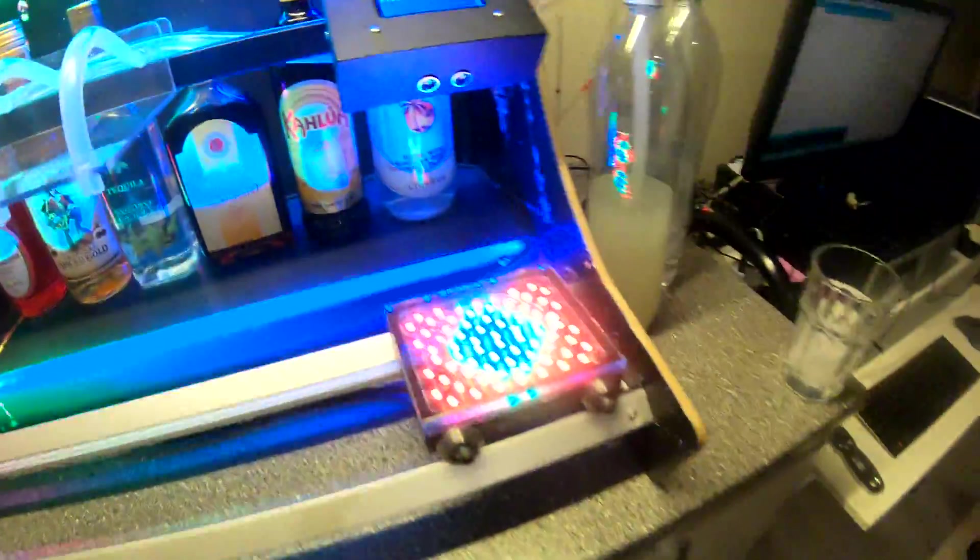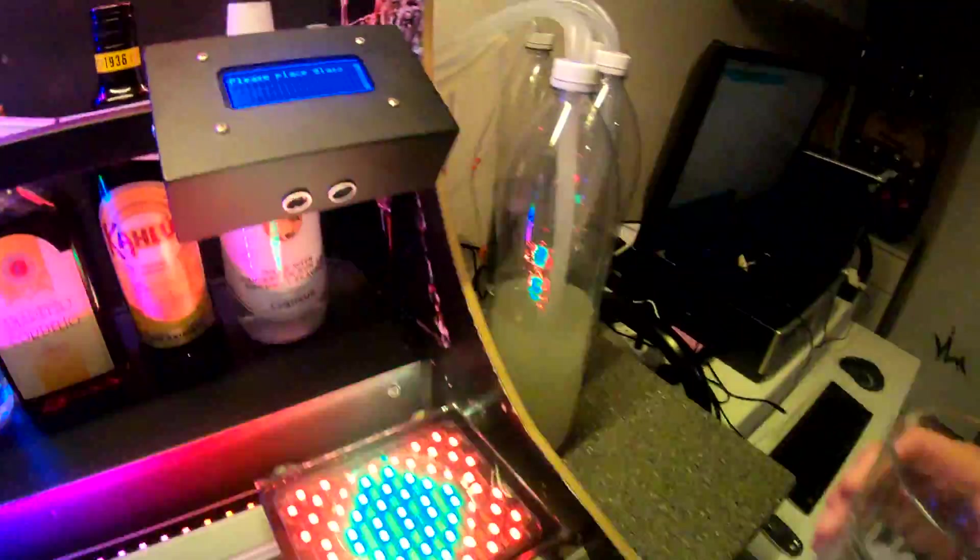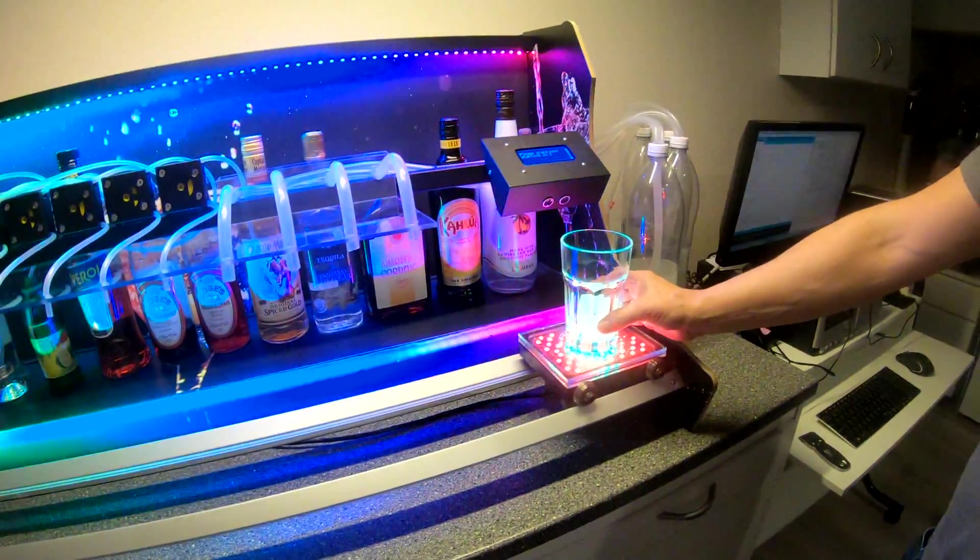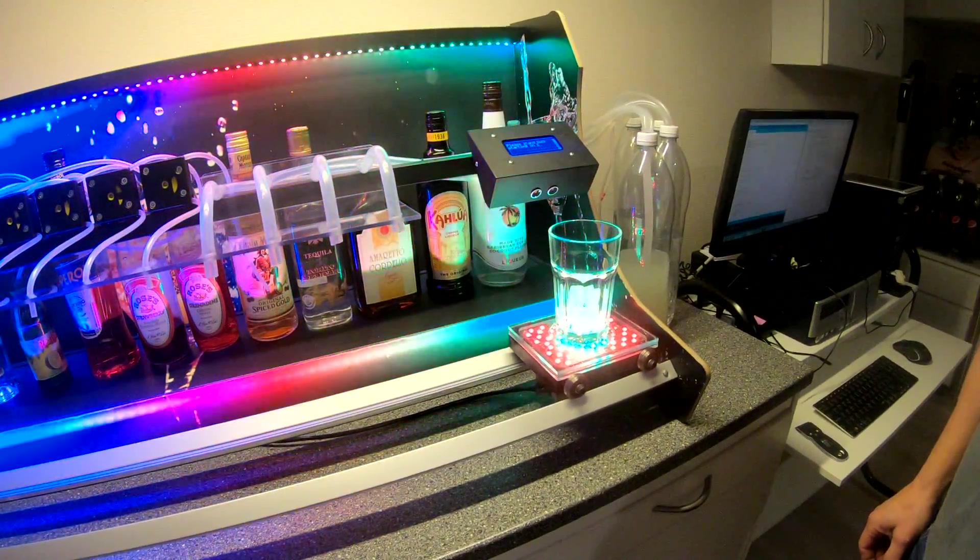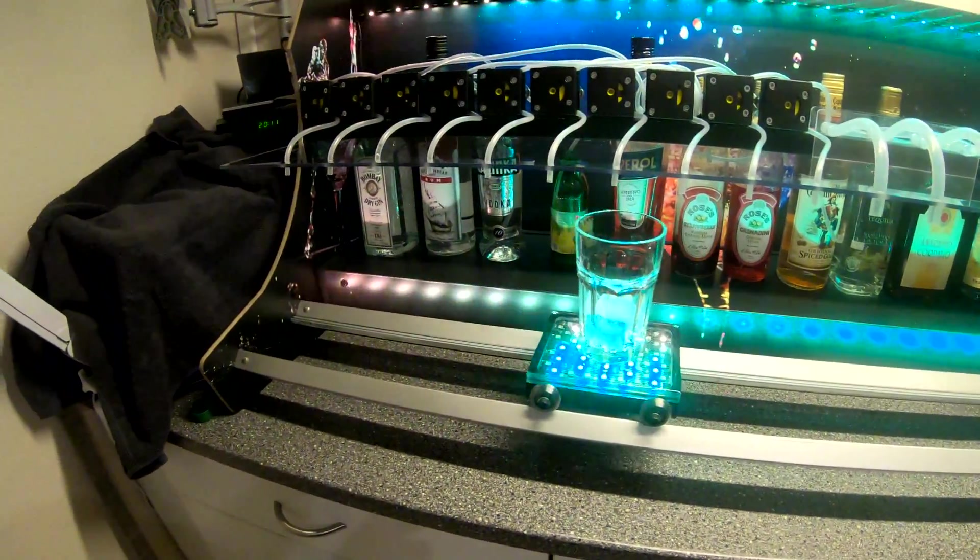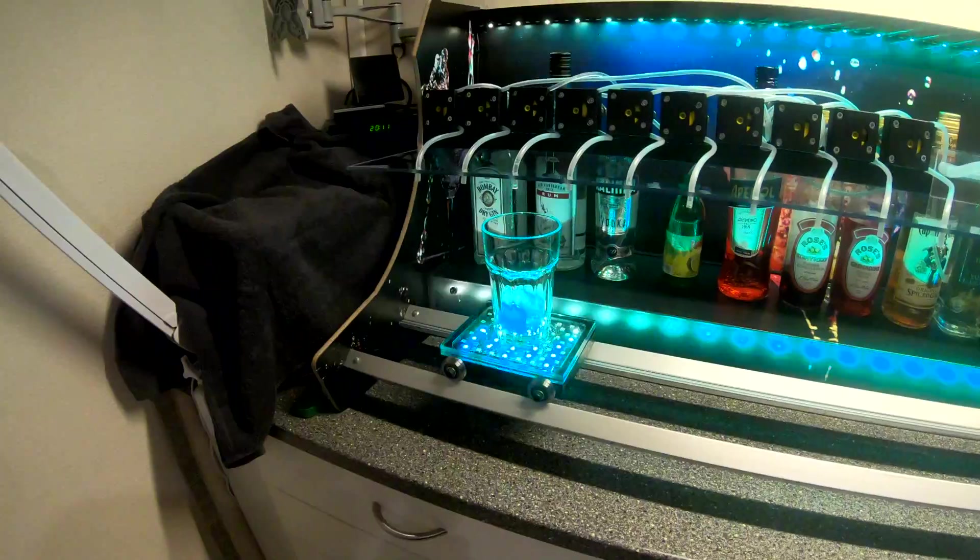You can find the code example for these in the description below and also an example of the app. You can also add some LED lights like I did and you can also add an LCD screen to show the user what is ordered. I also added a proximity sensor to sense when the glass is placed on the sleigh.